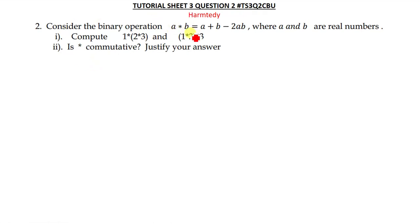Let's quickly begin. The question says: Consider the binary operation a⋆b = a + b - 2ab, where a and b are real numbers. Compute (1⋆2)⋆3 and (1⋆2)⋆3. For this, you first find with the brackets this side, then you change the brackets and put them like that, then you compute the solution.